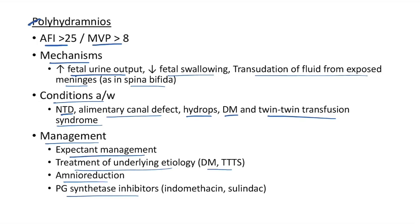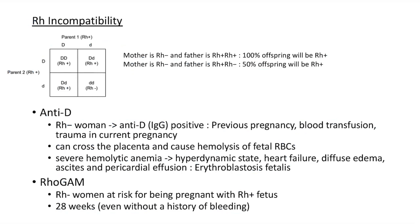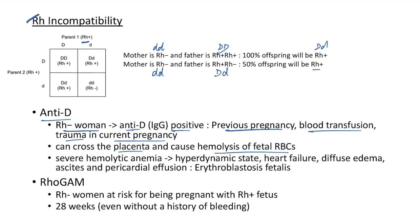Rh incompatibility: if the mother is Rh-negative (dd) and the father is Rh-positive (DD), 100% of offspring will be Rh-positive. If father is Rh-positive but heterozygous (Dd), 50% of offspring will be Rh-positive. An Rh-negative mother develops antibodies due to previous pregnancy with Rh-positive infant, blood transfusion, or trauma. These antibodies can cross the placenta and cause hemolysis of fetal RBCs, leading to severe hemolytic anemia, hyperdynamic state, heart failure, diffuse edema, ascites, and pericardial effusion — erythroblastosis fetalis.